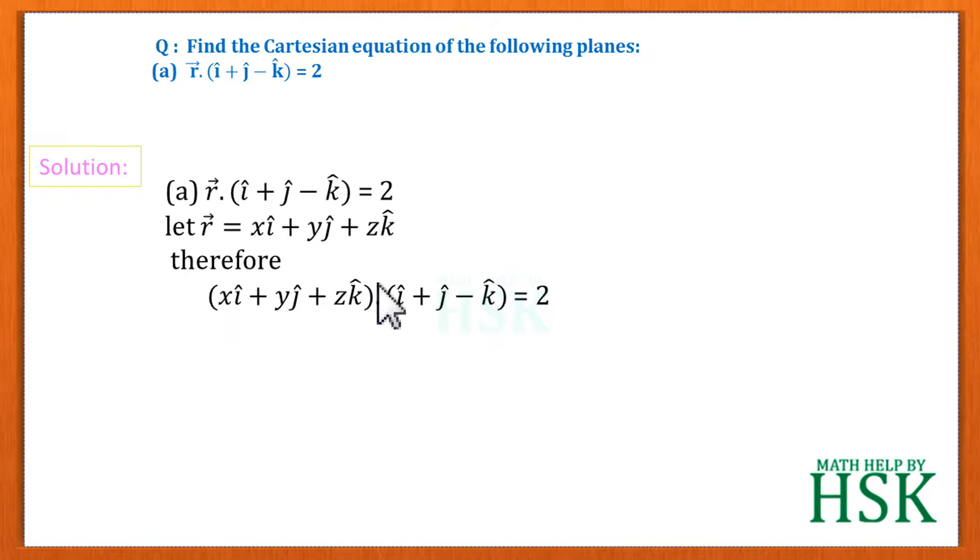So this will be equal to x into 1 that is x, y into 1 that is y, and minus 1 into z that is minus z. So I'm going to get x + y - z = 2, that is the equation, that is the Cartesian equation of this plane, which is the required answer for part a.